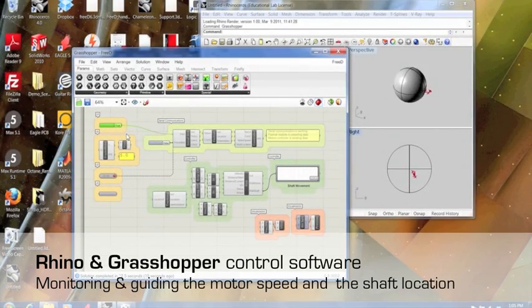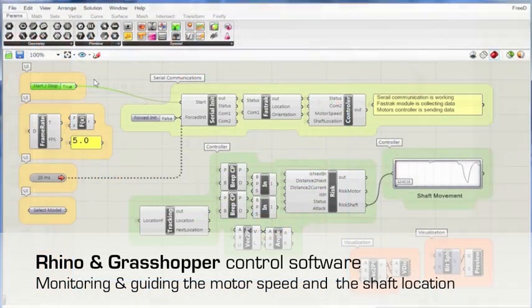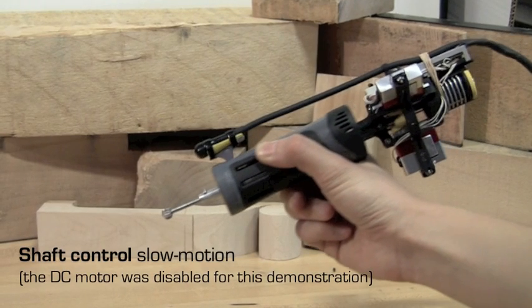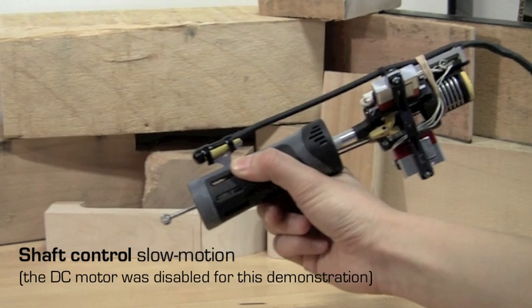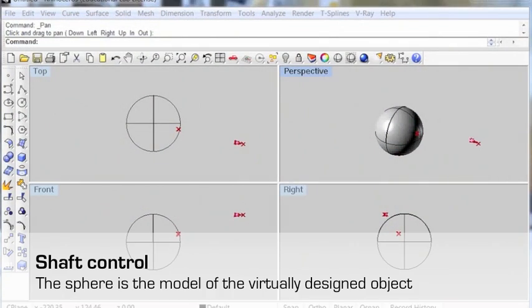On the computer where the planned virtual model resides, the software runs in Grasshopper, a parametric plug-in to Rhino. The software input is the tool's location, and the outputs are commands to the PCB on the FreeD tool.